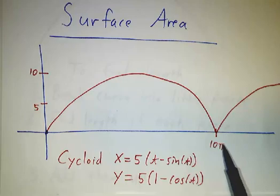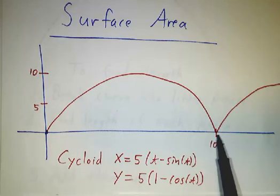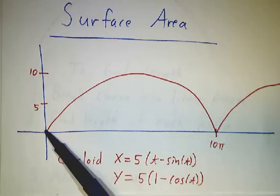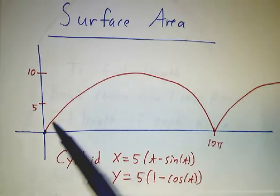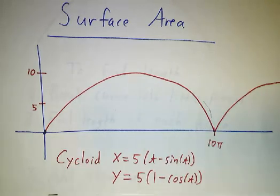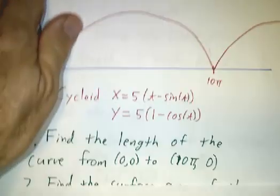Well, if you went in a straight line, that would be a distance of 10π, but you're not going in a straight line. You're going along the curve. What's the total distance traveled along the curve from here to here? So that's the first question.